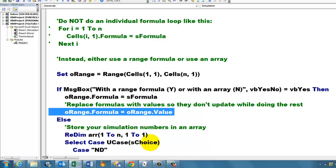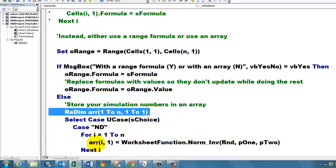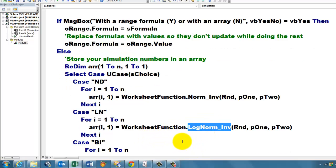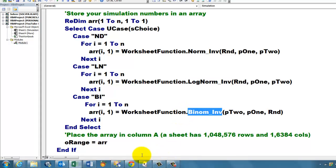We can also store the simulation numbers in an array. The array has been declared but not been set. Now we are going to set it with a ReDim statement from 1 to n in the rows, 1 to 1 in the columns, so it has only one column in the second dimension. Then we select UCase again. If it is ND, then we put in all the array elements, and now we are going to loop through them. But arrays are very fast. We use the WorksheetFunction.Norm_Inv. If it is LN, we use the LogNorm_Inv. Otherwise we use the Binom_Inv. Remember again you have to reverse the arguments.